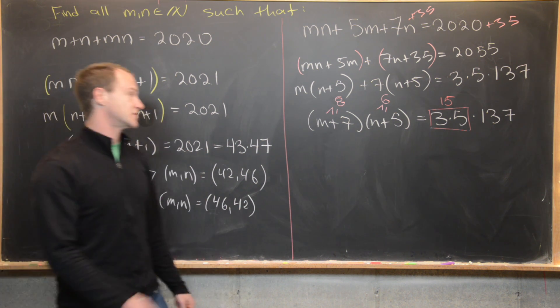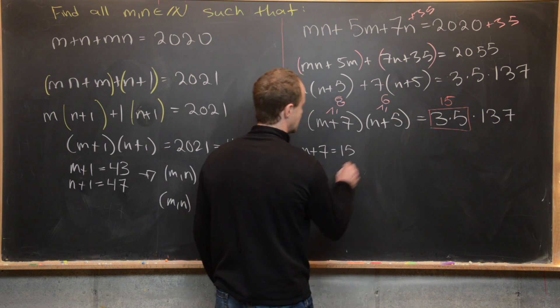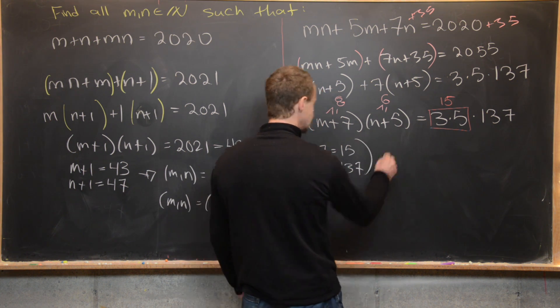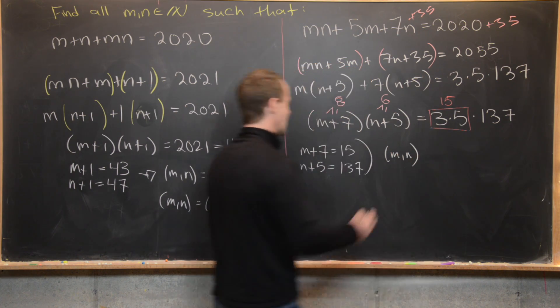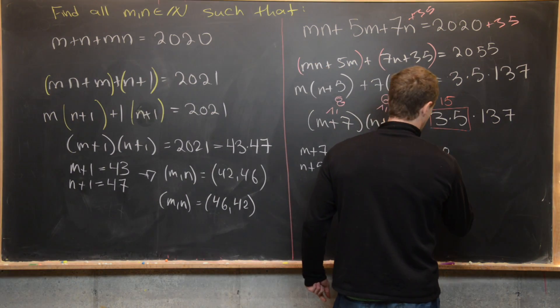So we'll have m plus 7 equals 15, and then n plus 5 equals 137. So let's see. That's going to give us (m, n) equals (8, 132). So that ordered pair. Great.